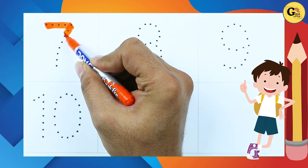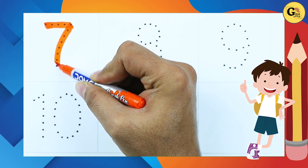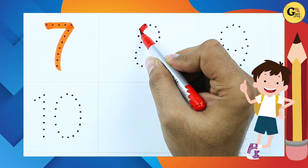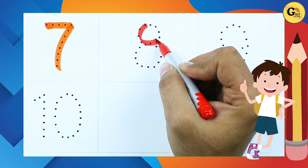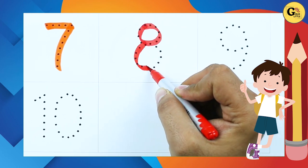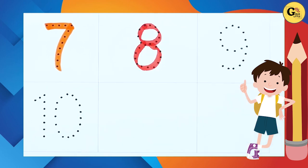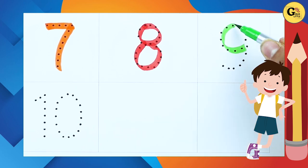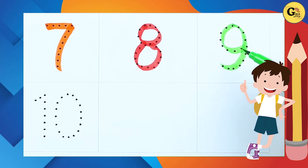It's number seven. Number eight with red color, it's number eight. Number nine with green color, it's number nine.